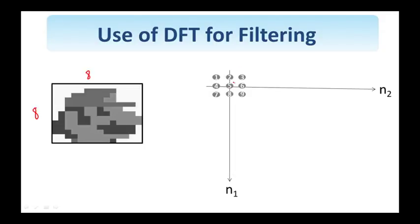and we want to convolve it with a system that has this 3x3 impulse response. First of all, we know that the result of the convolution is going to be a signal that is going to have 8 plus 3 minus 1 equals 10